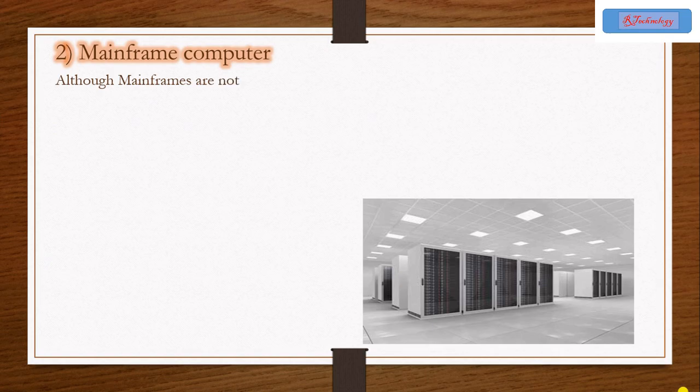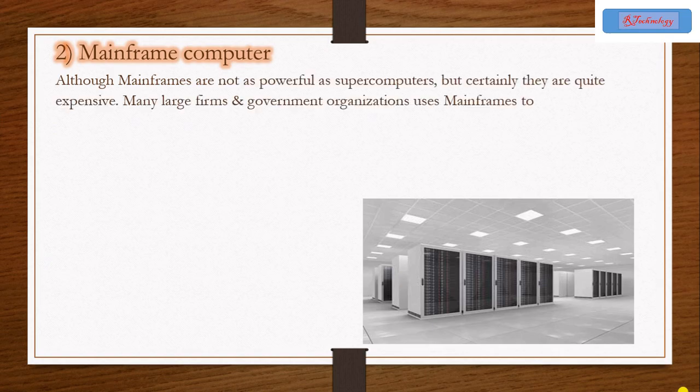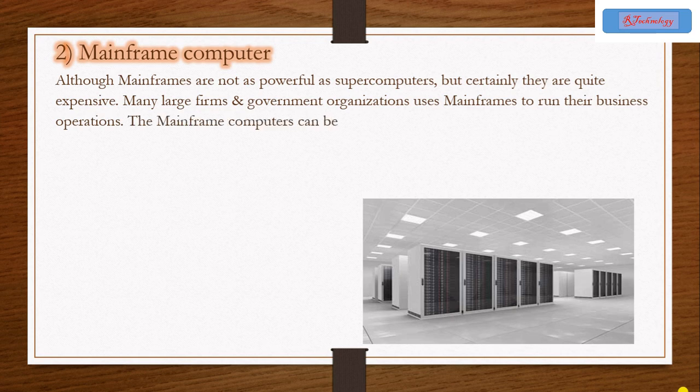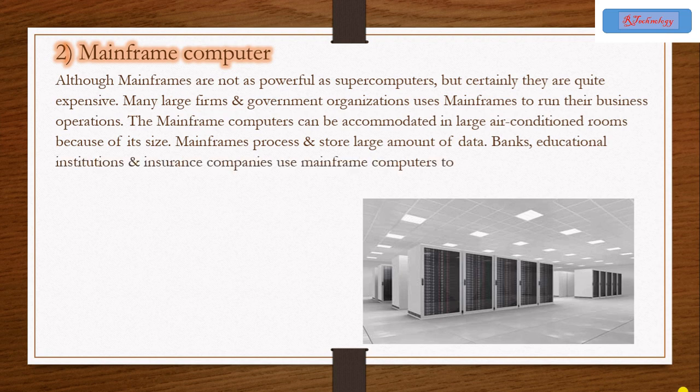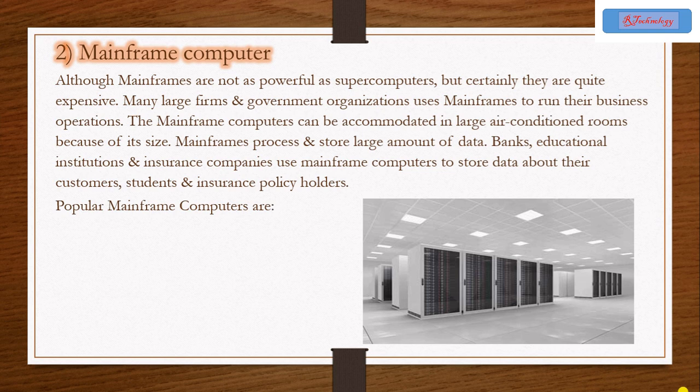Number 2 is Mainframe computer. Although mainframes are not as powerful as supercomputers, but certainly they are quite expensive. Many large firms and government organizations use mainframes to run their business operations. The mainframe computer can be accommodated in large air-conditioned rooms because of its size. Mainframes process and store large amounts of data.